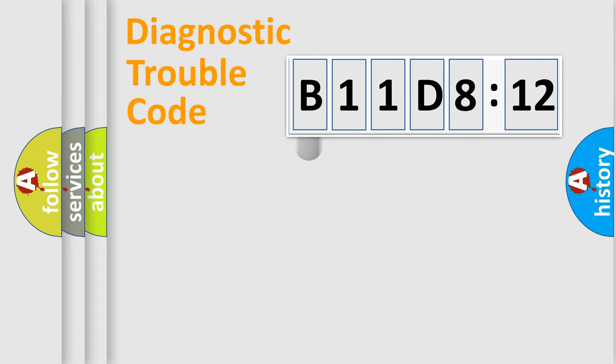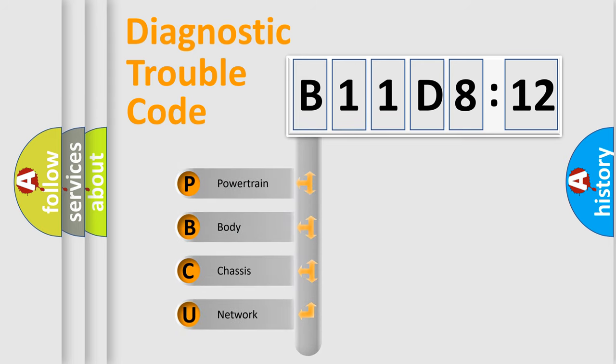First, let's look at the history of diagnostic fault code composition according to the OBD2 protocol, which is unified for all automakers since 2000. We divide the electric system of automobiles into four basic units.